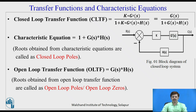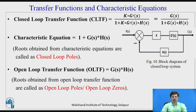The characteristic equation is written as 1 plus G(S)·H(S). Observing the closed loop transfer function, whatever is present at the denominator represents the characteristic equation of the closed loop control system. The roots of this characteristic equation are called as closed loop poles. For this block, we can write G(S)·H(S), and the roots of G(S)·H(S) are called as open loop poles or open loop zeros.